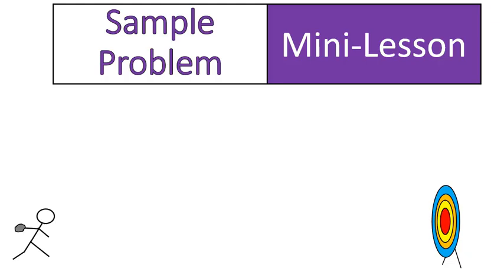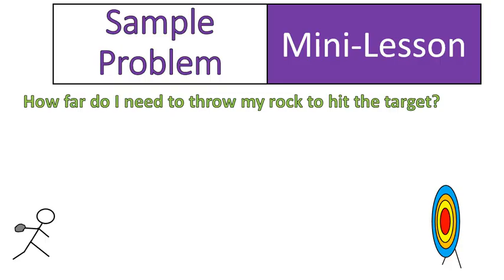Now it's time for a practice problem for you. There's a picture of me. I've got a rock in my hand, and I'm going to throw it at that target to try and get a bullseye. The question is, how far do I need to throw my rock to hit the target? Now I need a couple of pieces of information before you can solve that. The distance is 7 and 3 quarters inches,